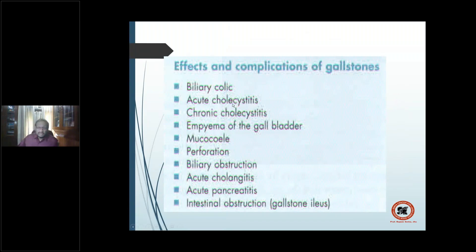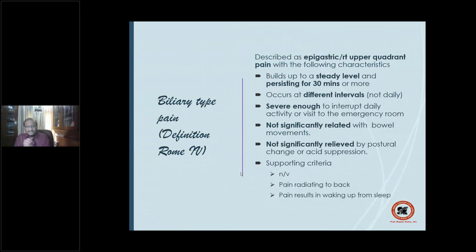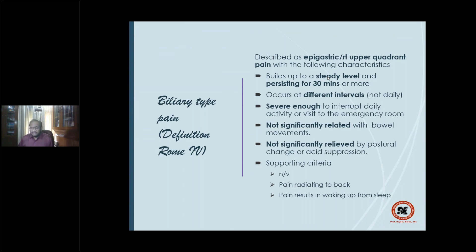Complications of gallstones: biliary colic, acute cholecystitis, and chronic cholecystitis. Biliary colic — the Rome 4 classification defines biliary-type pain as epigastric or right upper quadrant pain that: builds up to a steady level and persists 30 minutes or more; occurs at different intervals, not daily; is severe enough to interrupt daily activities; is not significantly related to bowel movements; and is not relieved by postural change or acid suppression.